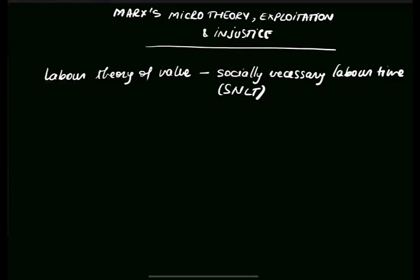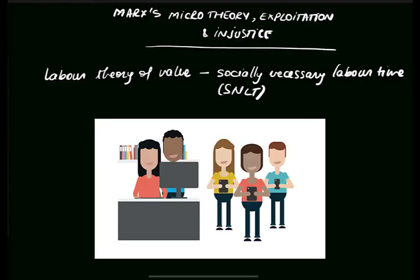In order to understand the role that socially necessary labor time plays in Marx's account and how it leads to his view about exploitation, let's consider an example. Let's say Jane and I are making an app. One of the main problems of labor theories of value is that, for instance, let's say Jane is a perfectionist. She spends twice as long on making this app as I spend making mine. But most of this perfectionism is actually in her own head because at the end of the day, the apps are going to be the same. Marx would say that Jane's app is not worth twice my app because she put twice as much labor into it.